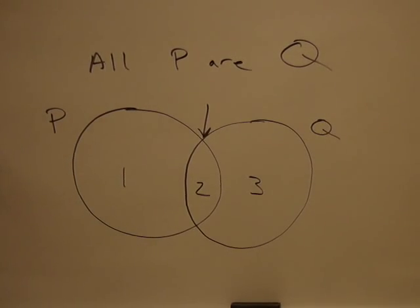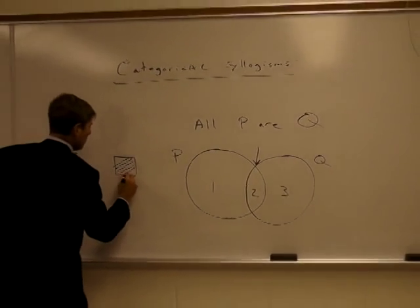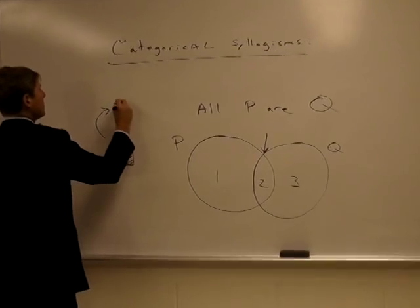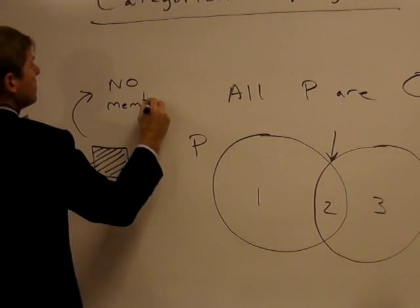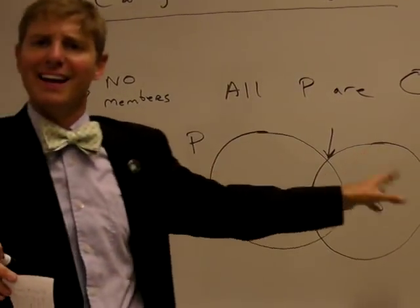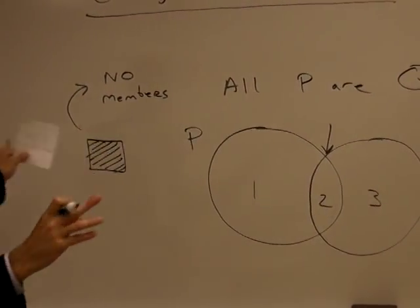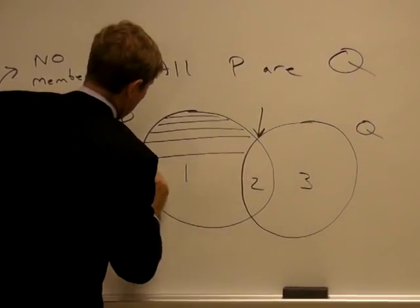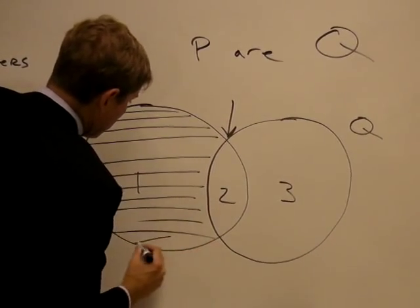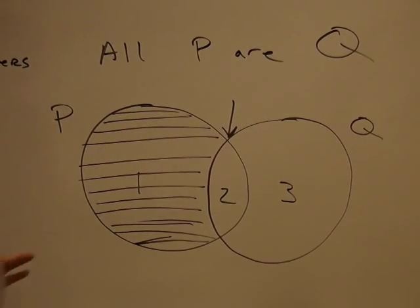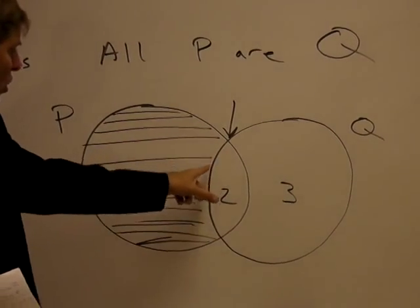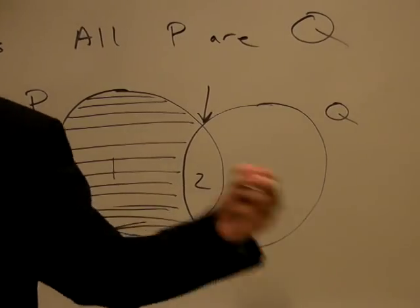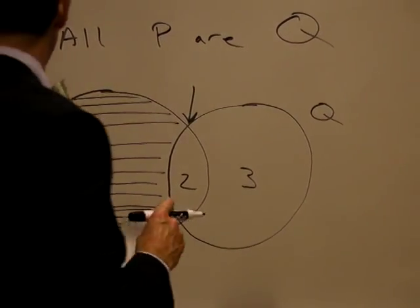For universal statements, when we diagram these, we shade in the area in which there are no members. So when I represent an A-statement pictorially, I'm going to shade in sector one. Because what I've said is 'all P are Q' — if it's a P and it exists, it's also going to exist in the Q section. Or to put it another way, there are no P's that are non-Q.